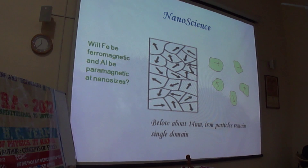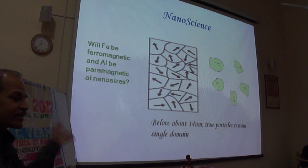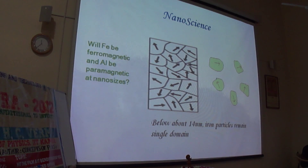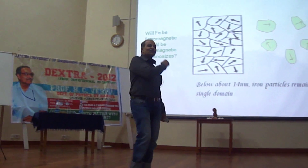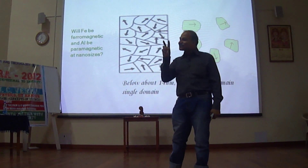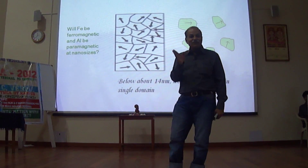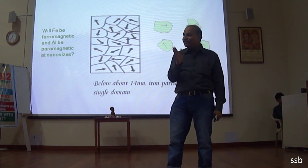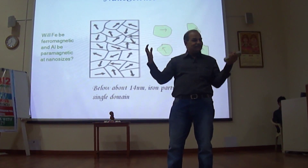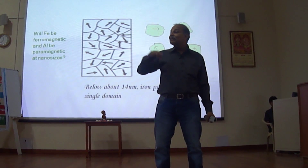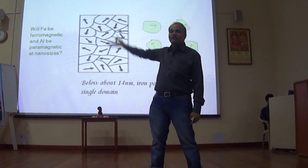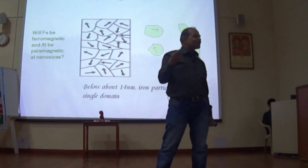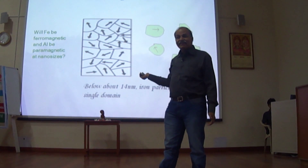For bulk-size iron, you have domain structure — so many domains, all clubbed in different directions. But if you go for 14 nanometers or below, then iron particles remain single domain. Why does a nail become a magnet when you rub it with a strong bar magnet? Because the domain walls separating different domains shift, and you get big domains having magnetic moments aligned with the field. But if the domains are all separate from each other — single domain particles — you won't get that permanent magnet by rubbing. It's called superparamagnetic.